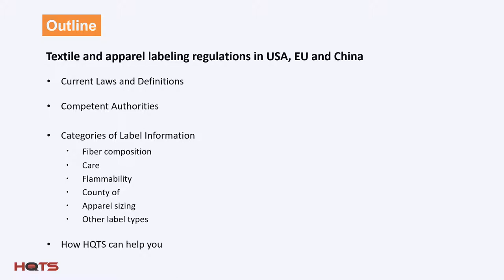The items we will cover in today's presentation include the current legal status of regulations in these three countries, the industry definitions, the competent authorities for each, and then an introduction to different categories of labeling information — for example, fiber composition, care instructions, flammability, country of origin, apparel sizing, and others specific to each country. And finally, you'll hear our pitch on how HQTS can help you navigate the maze of labeling requirements.